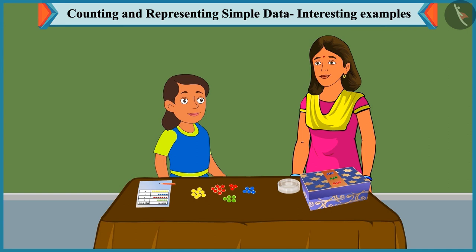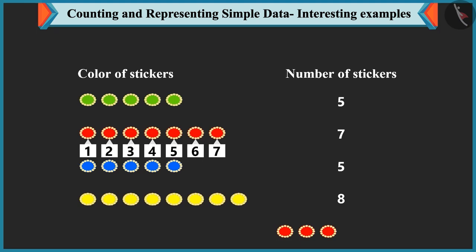Come on, take these. I have some more red stickers. Count these along with the stickers you already have with you. Mummy, I had seven red stickers. You have given three more red stickers.